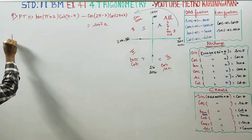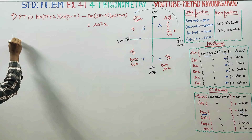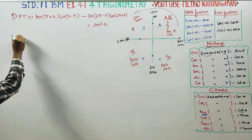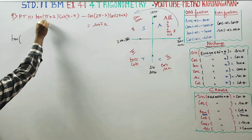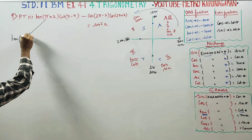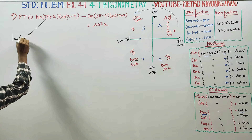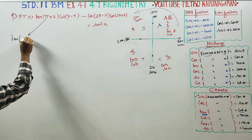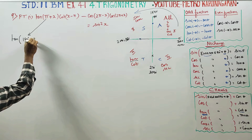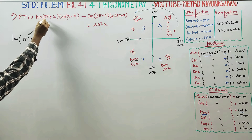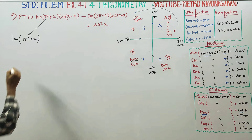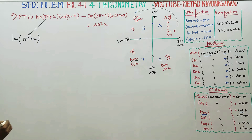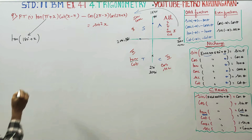I am starting the problem with tan. Pi over 4 — 180 degrees over 4 is a shortcut. Radian to degree conversion shortcut: pi is 180 degrees, so pi over 4 is the shortcut.